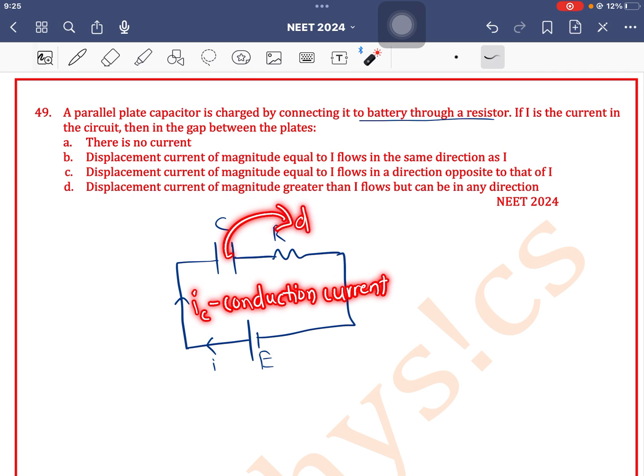When the capacitor is charging, the conduction current is equal to the displacement current. So displacement current of magnitude equal to I flows in the same direction as I. Therefore, option B is the correct answer.